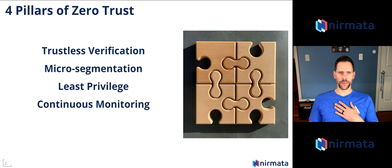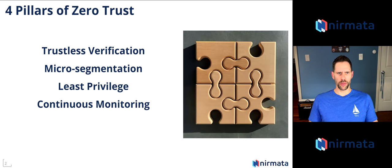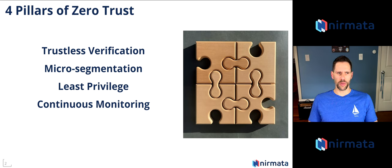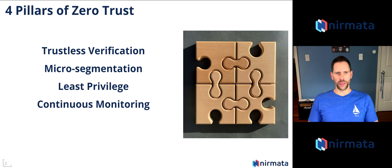Let's dive right in. First and foremost, there are four pillars to Zero Trust. The first is trust as verification. Certificates, workload identities - all of these things should be the foundations of trust rather than IP addresses, which is the more traditional approach, or subnets. Either way, layer four is no longer enough.